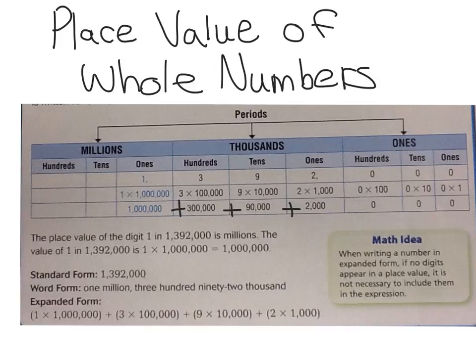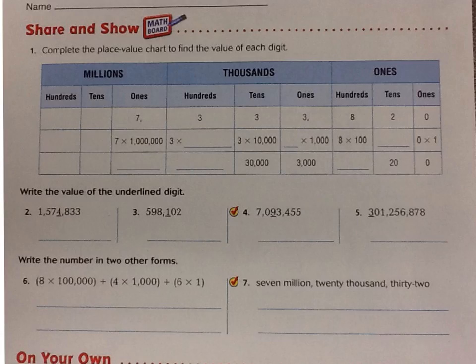So we practiced this in class and we're going to continue practicing for homework. Now we're going to take a look at the questions we looked at in class. So we had to complete this chart. They gave us the number 7,333,820, and so what we did is we broke that down. It might be easy for a student to write the bottom column first because that was the old way that they saw expanded form.